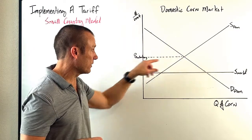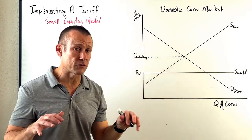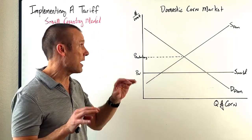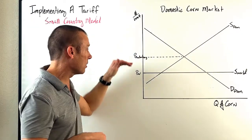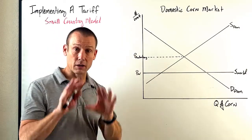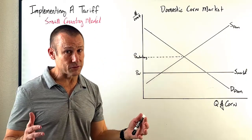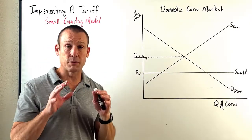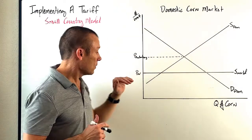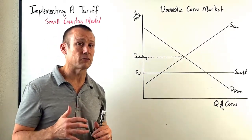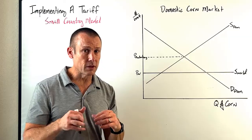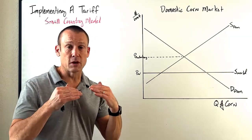The price where those two curves intersect is price autarky — autarky is when you're not involved in trade at all. If this country didn't allow any imports, this is the price that would prevail. I do not want students to call this price domestic, unless the country is not involved in trade. If it had free trade for corn, the price world would be the price domestic — price domestic is whatever price is prevailing in the domestic economy, which with a tariff we'll see shortly.